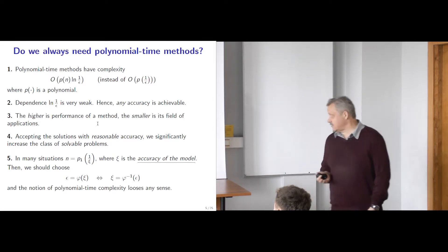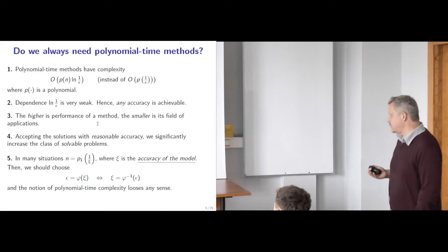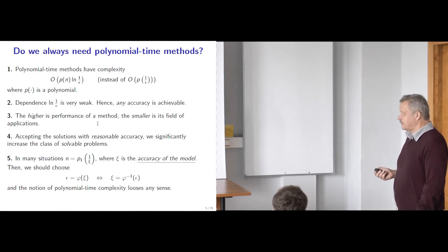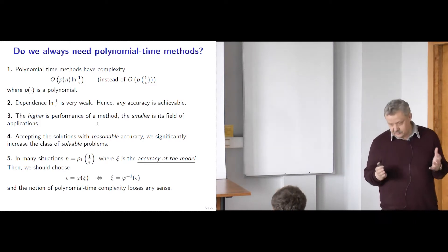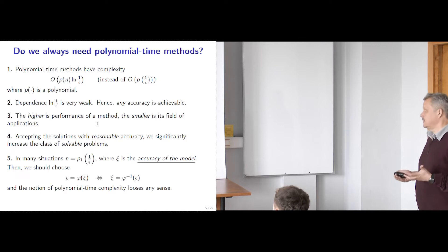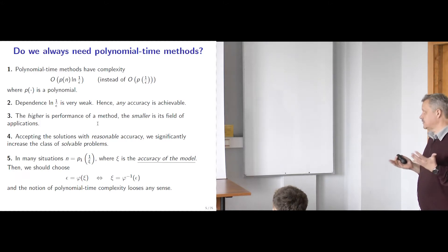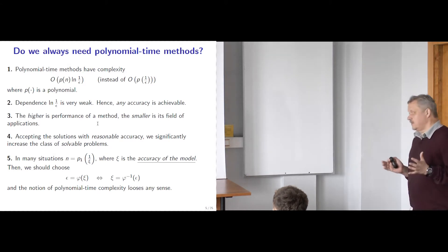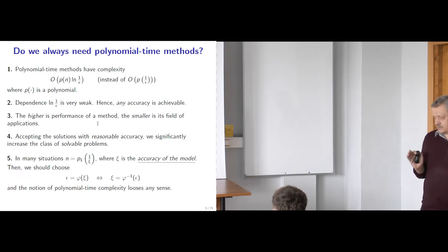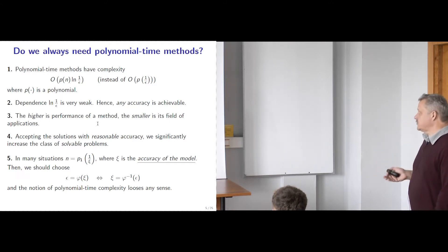There is no sense asking for higher accuracy in the solution of a discretized version than the internal accuracy of the model. If we invert this function, we see that xi is a function of epsilon and n is also a function of epsilon. Therefore, the dimension and the accuracy become dependent in this type of problems. In this situation, the notion of polynomial time complexity loses any sense, because there is no reason to fight for the logarithm. We should remember that polynomial time methods are not the full analog of the most efficient schemes — in some situations they are indeed very efficient, but in other situations they may not be very reasonable.